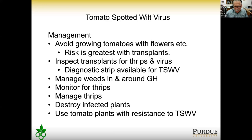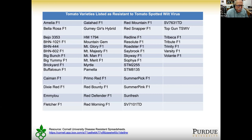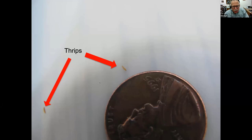Use tomato plants with resistance to tomato spotted wilt virus. A list of resistant varieties is available — not suggesting you turn all your production over to one of these, but if you've had problems in the past, it makes sense to trial one variety and see how it fits your production and how it responds to the virus. There are lots of different types, so one may fit into your production system.